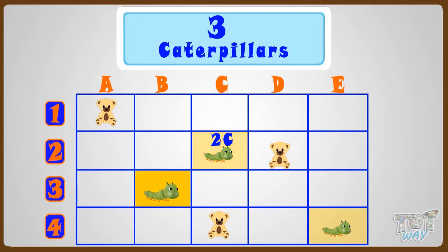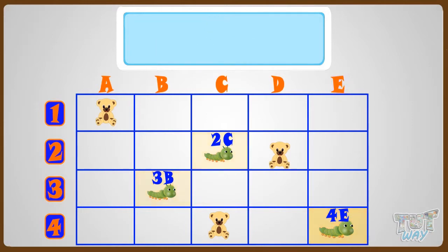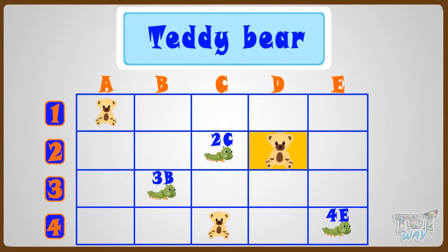Other caterpillar is at 3rd row and B column. So we can name its position as 3B. And the other 3rd caterpillar is at 4th row and E column. So its position can be named as 4E. Now let's name the location of this teddy bear. It is at 2nd row and D column. So its location is 2D.